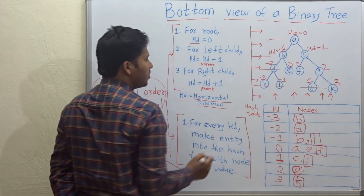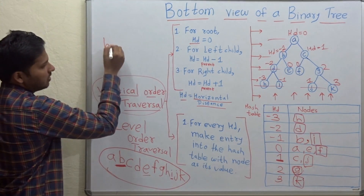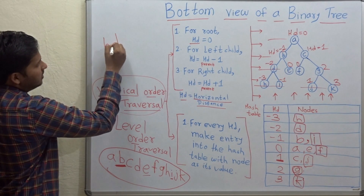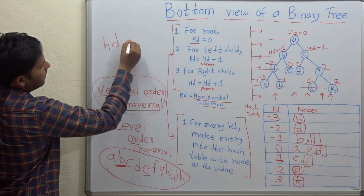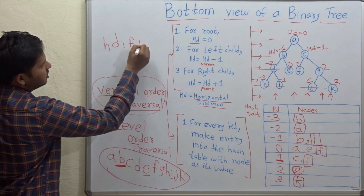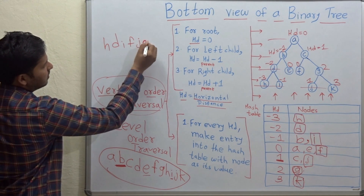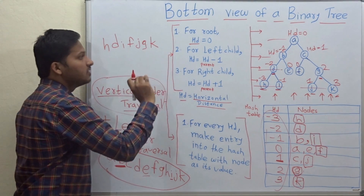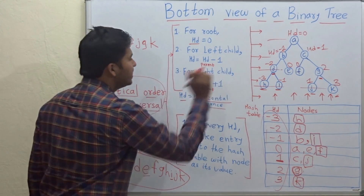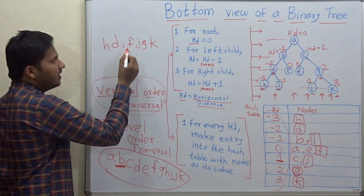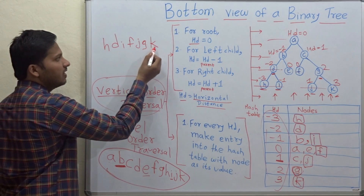So our bottom view is: h, d, i, f, j, g, k. The bottom view of our binary tree is h, d, i, f, j, g, k.